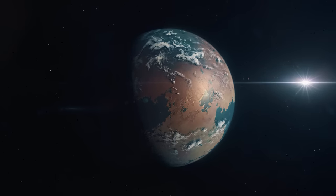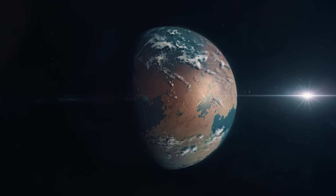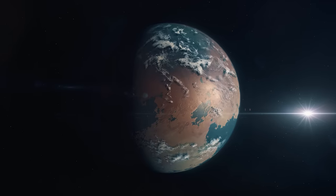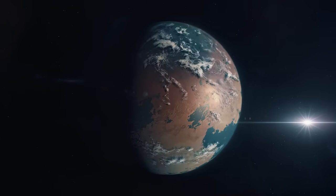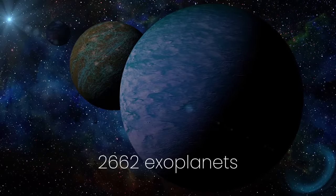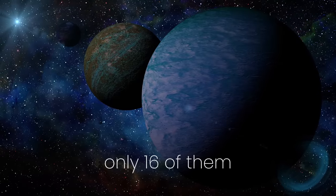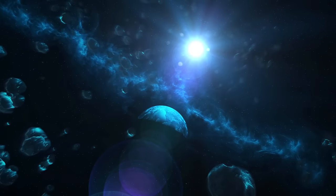Kepler-1649c provides yet another example of an Earth-sized planet in the habitable zone of a red dwarf star. But before we get ahead of ourselves, it's important to note that out of the 2,662 exoplanets identified by Kepler, only 16 of them lie inside the Goldilocks zone, and out of these 16...